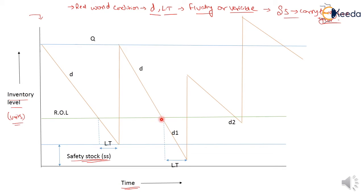After that point, the demand rate changes and varies with rate D1, where D1 is greater than D. So the inventory item is consumed faster than the D rate. Here the safety stock is used to consume the inventory item. With demand rate D1, the curve reaches into the safety stock, which is used to fulfill inventory demand when the demand rate changes.